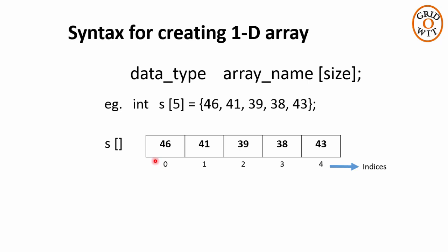In this array s, at 0th index, the integer value stored is 46, at first index, the value is 41, at second index, the value is 39, and so on. Now to access or print the specific array element, following syntax is used in C programming language. printf %d, first write the array name s, and then in square bracket write the index position whose value you want to access. Like in this array s, the value at index 0 is 46, so this printf statement will print 46. Similarly, s[3] will print 38 because in the array s, at index 3, the value is 38.